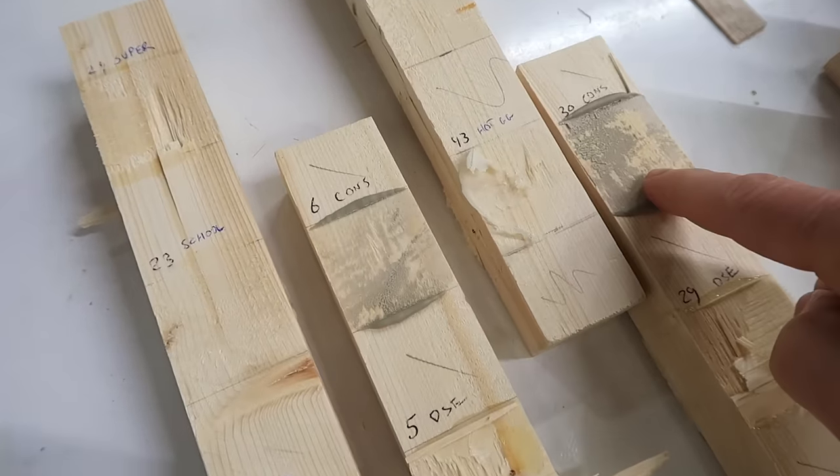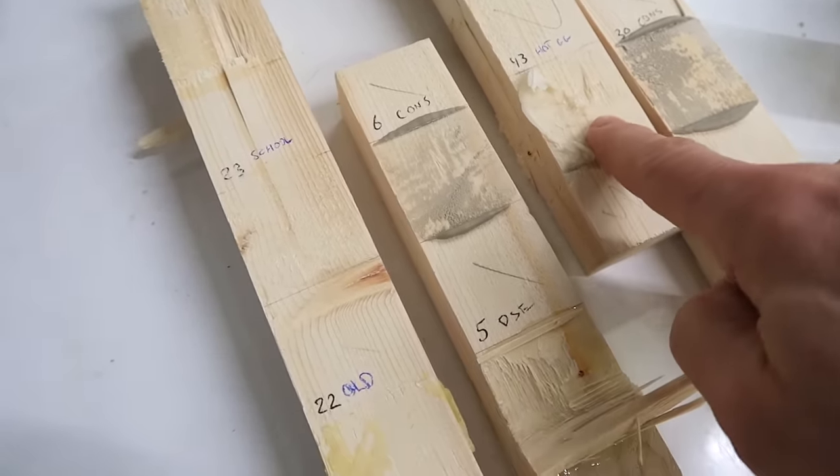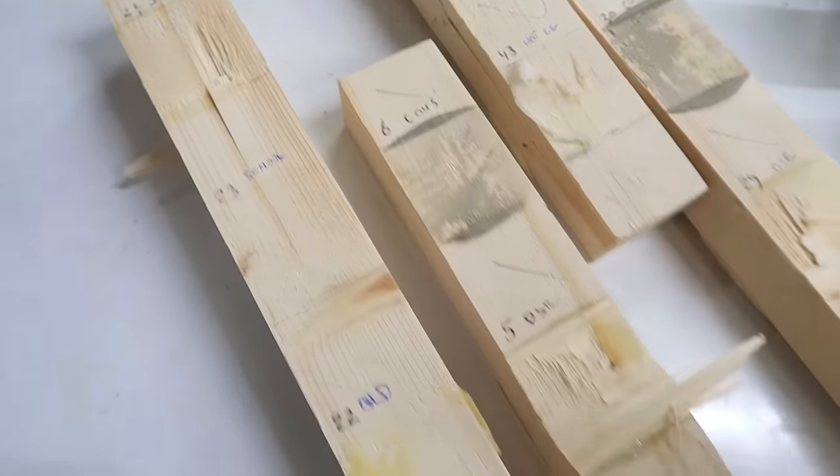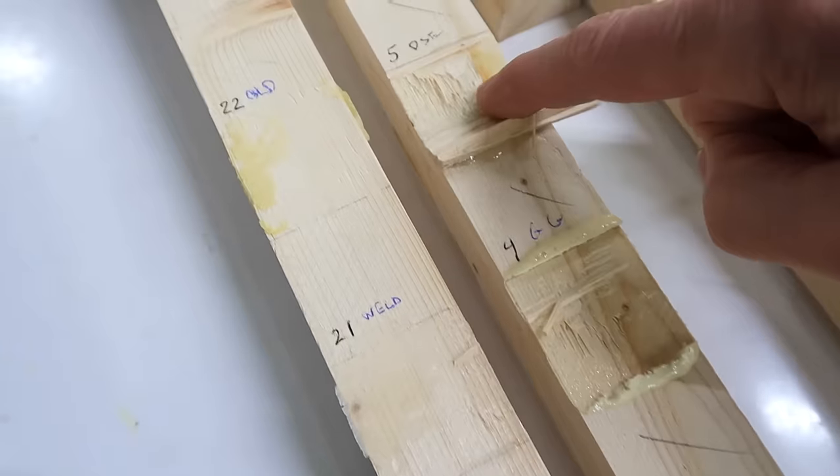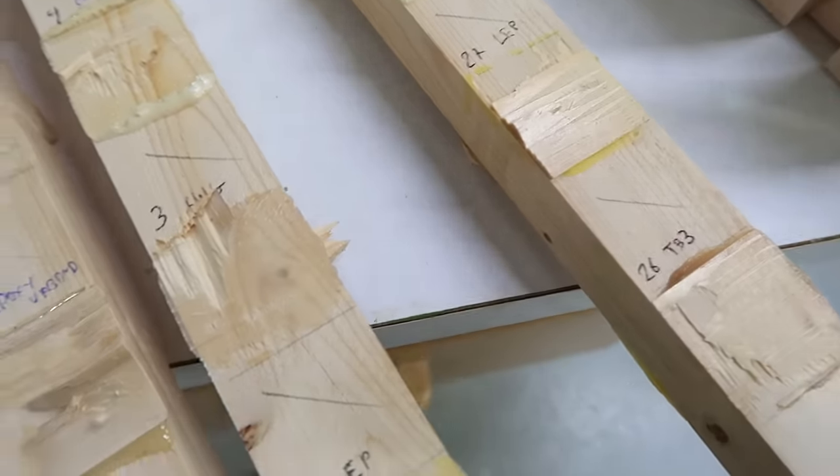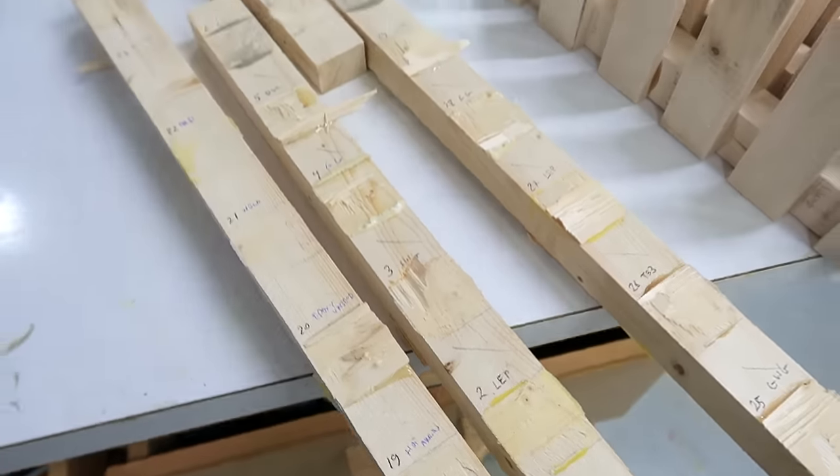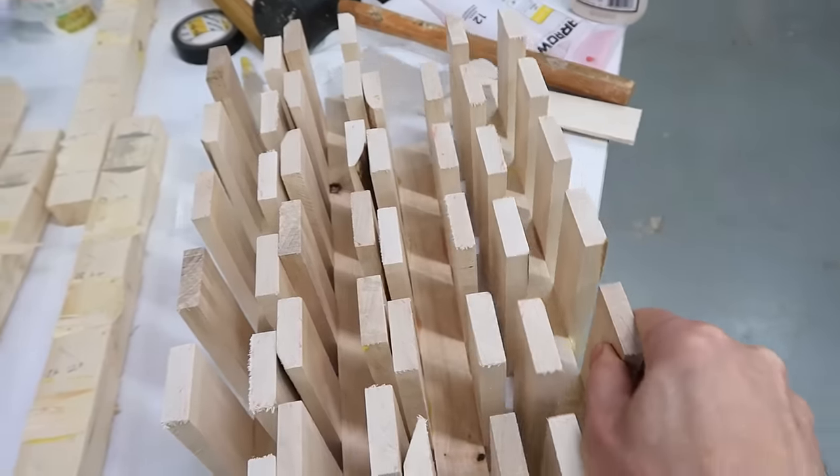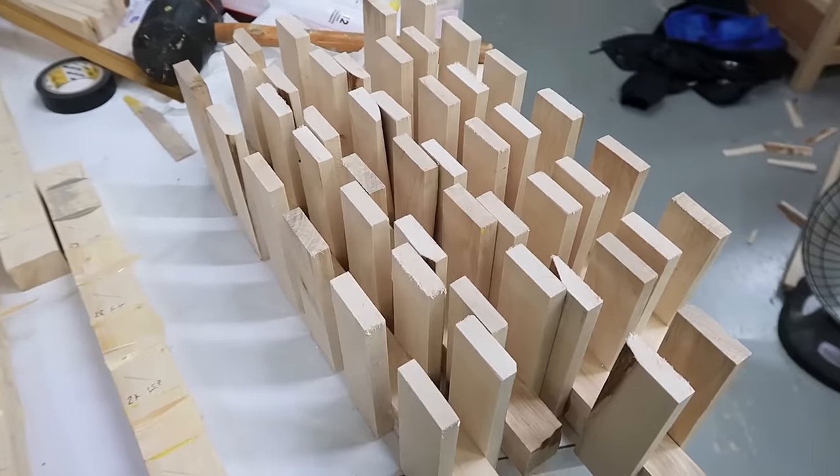The weaker glues, construction adhesive, the random hot glue in the glue gun, and the school glue all failed without tearing much out of the wood, whereas a lot of the other ones, you see here, for instance, there's more wood failure than glue failures. But it's all quite random, so I've remade all of these with hardwood, but I've eliminated the weaker glues, like construction adhesive and the crummy hot glue.